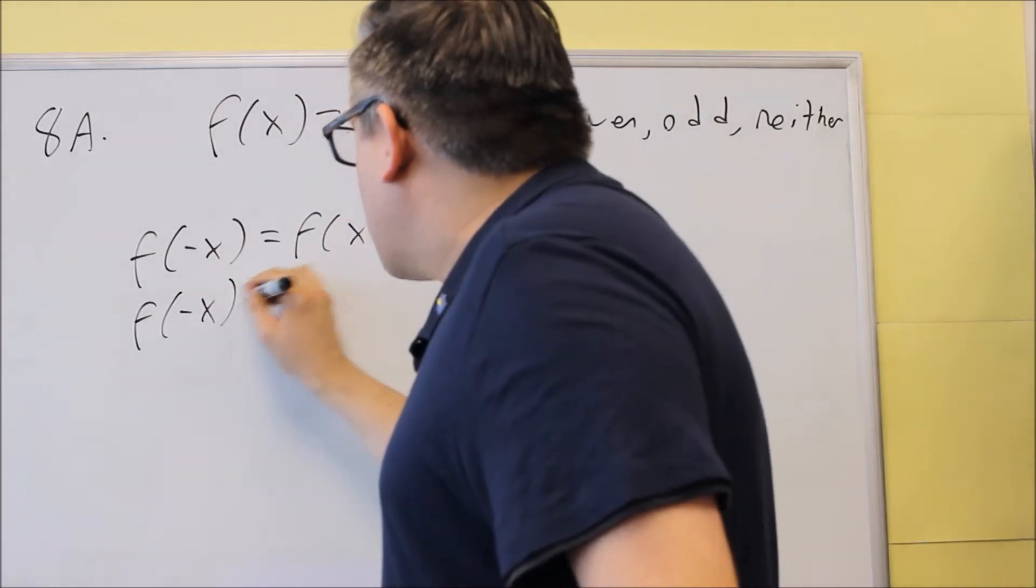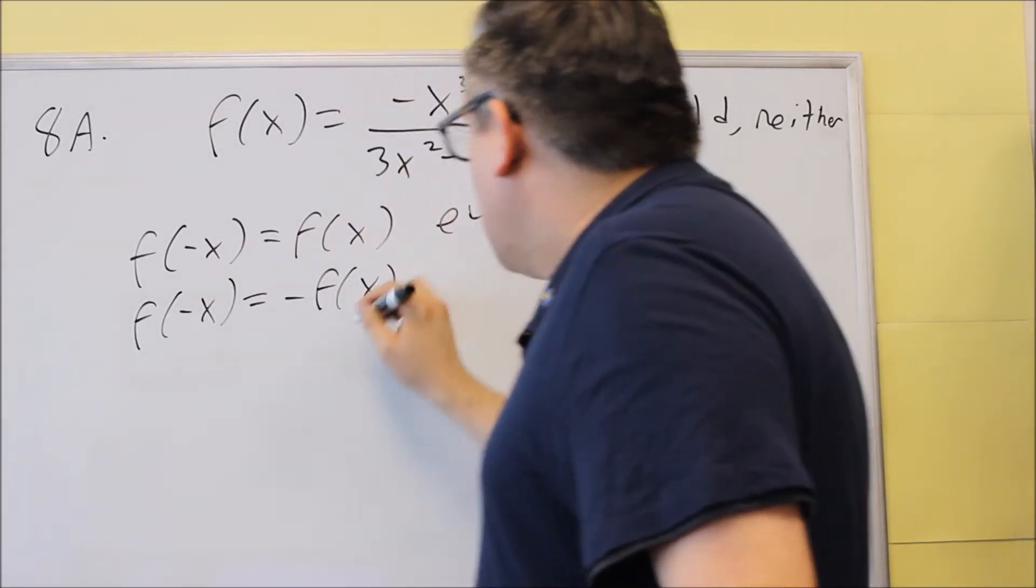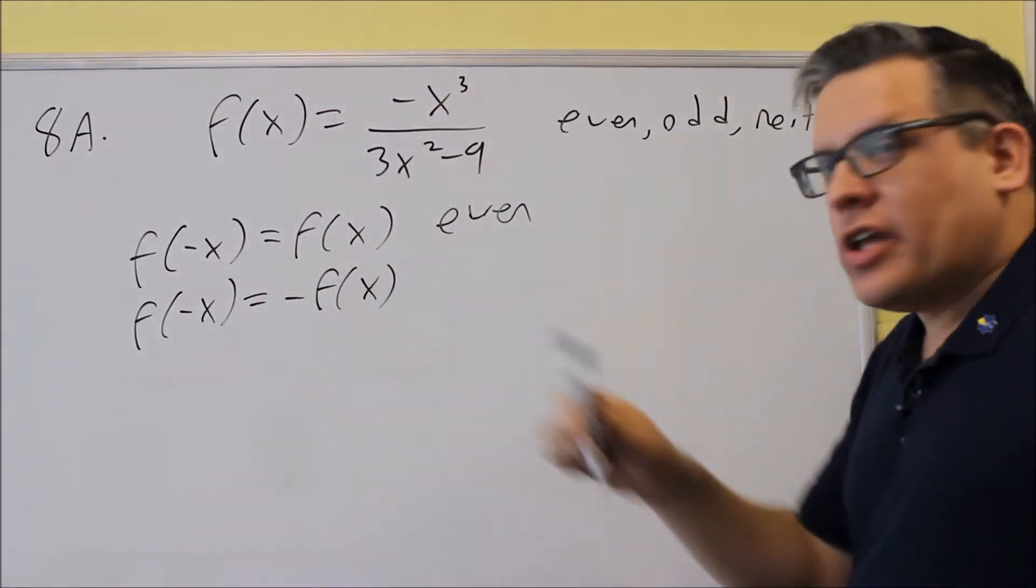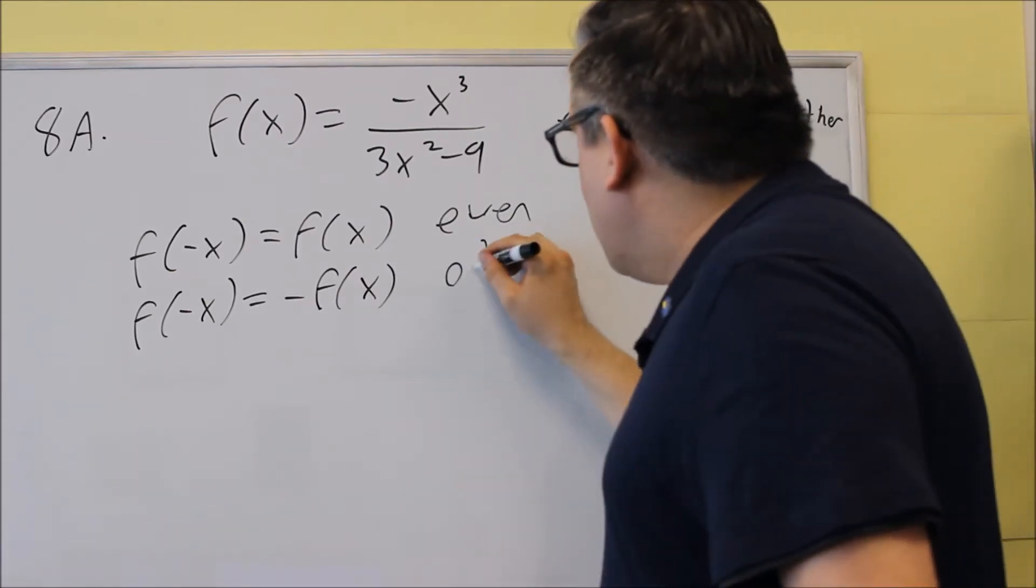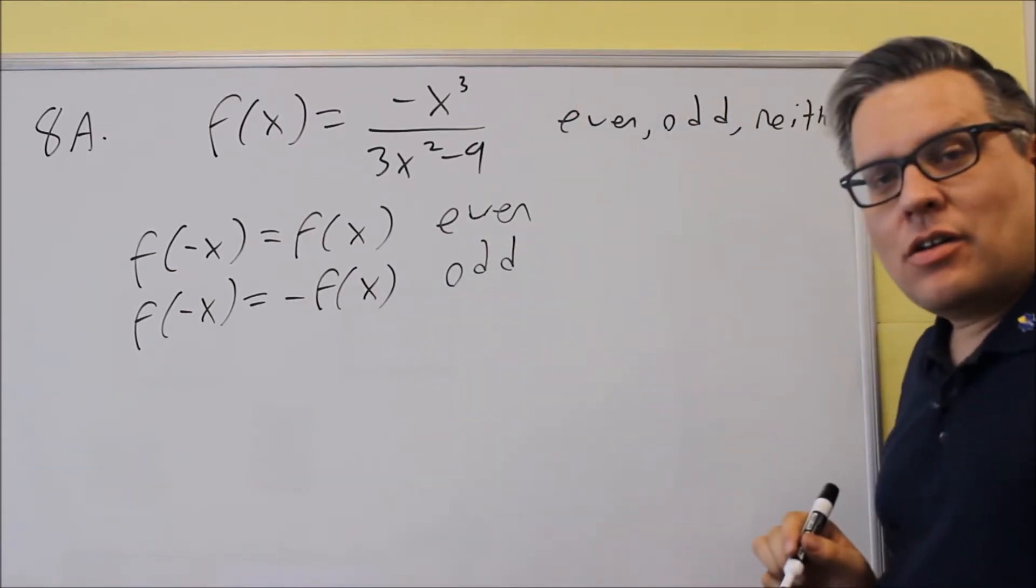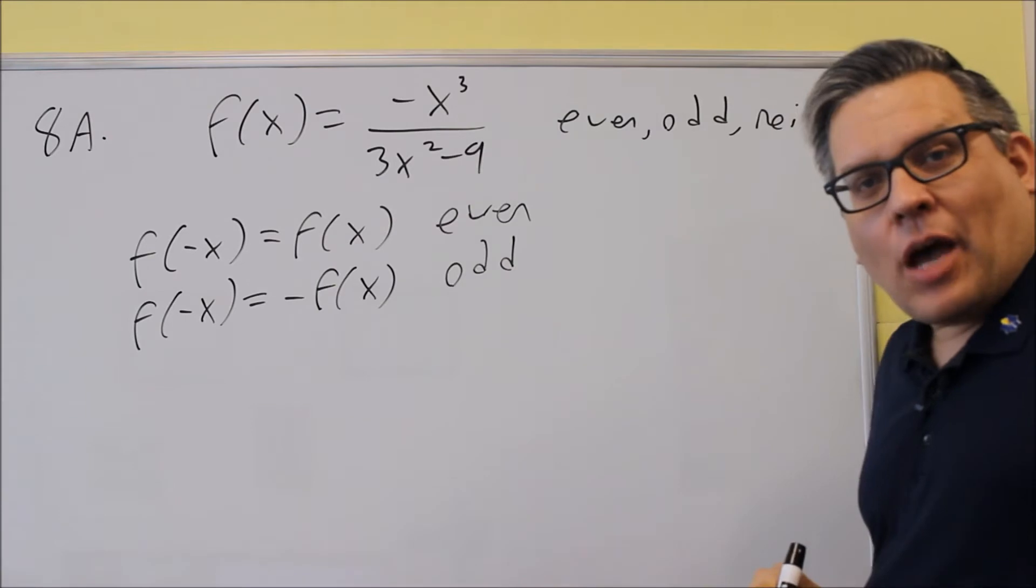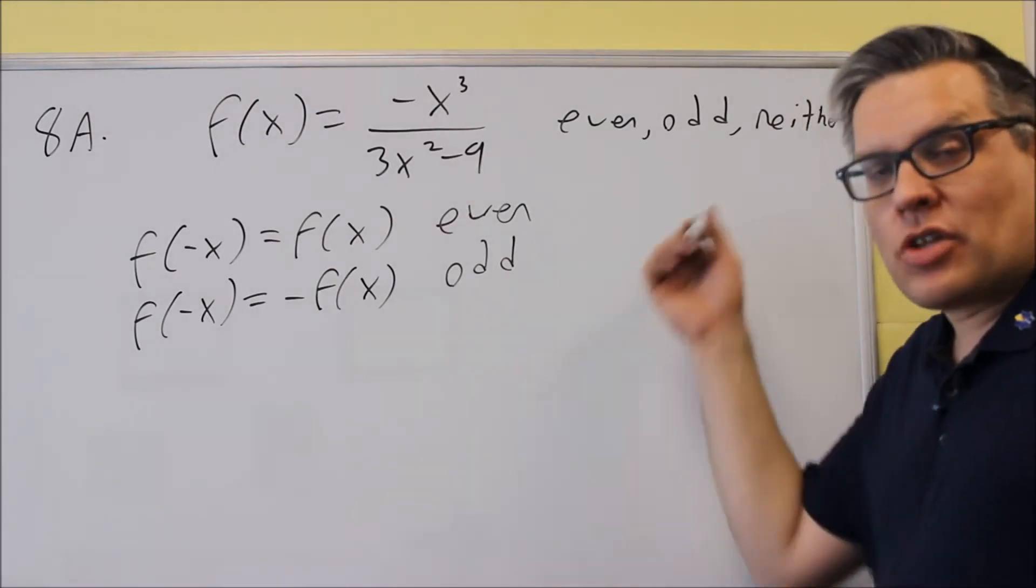If you put a negative into the function and you get exactly the same function but with a negative sign out front, then this is classified as odd. If you don't get any of that when you plug in negative x, that means it's going to be neither.